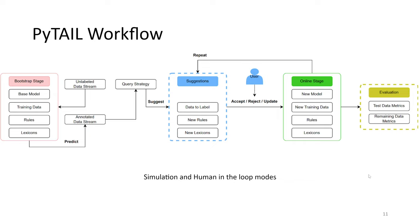The user can then accept, reject, or update these rules or introduce new ones. In the online stage, the model is updated with the renewed dataset or renewed features and lexicons. Finally, as we go through this whole loop, we track the various evaluation metrics defined for our model.